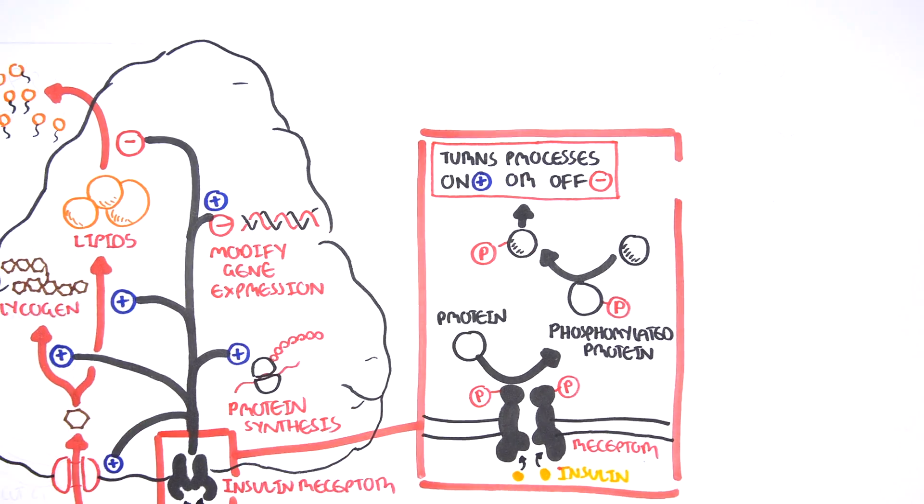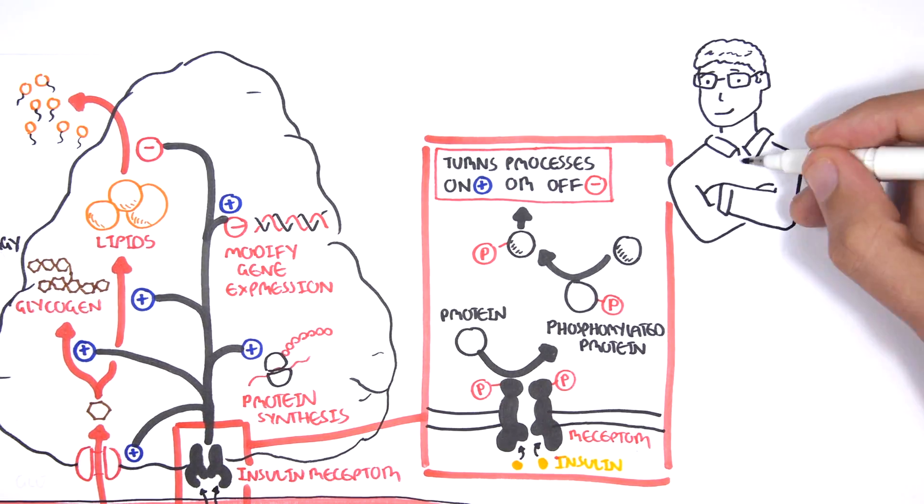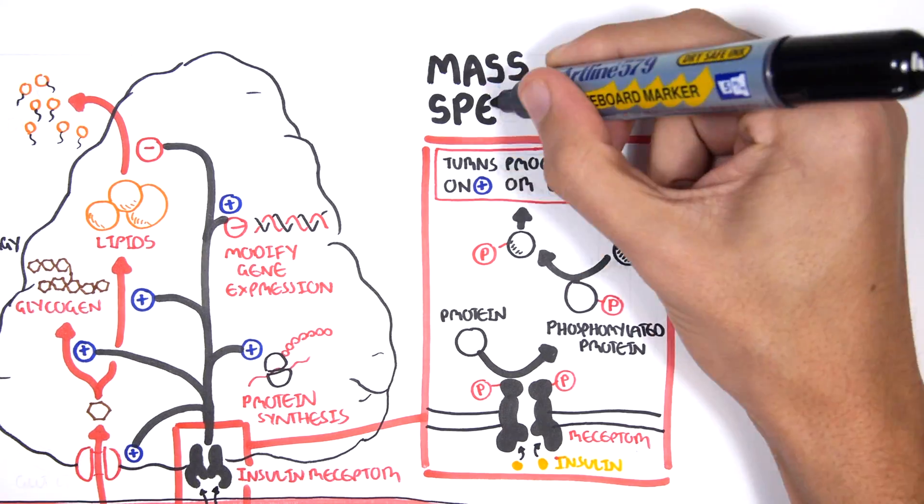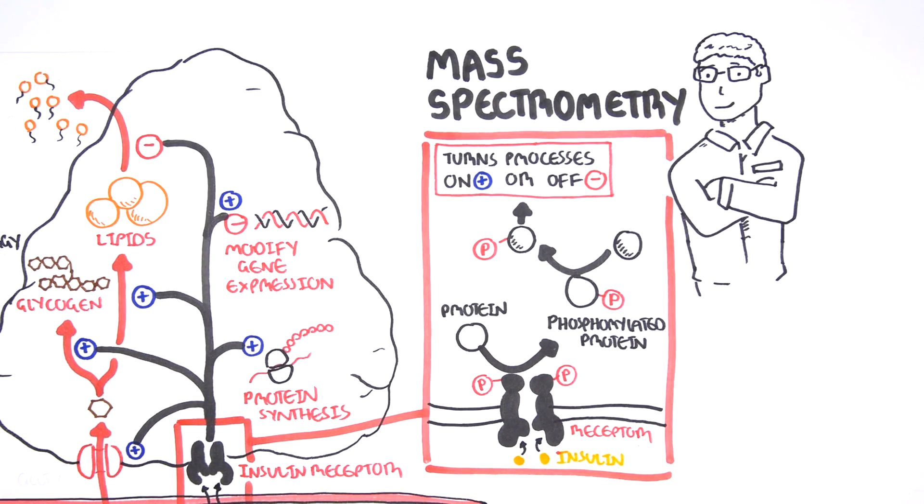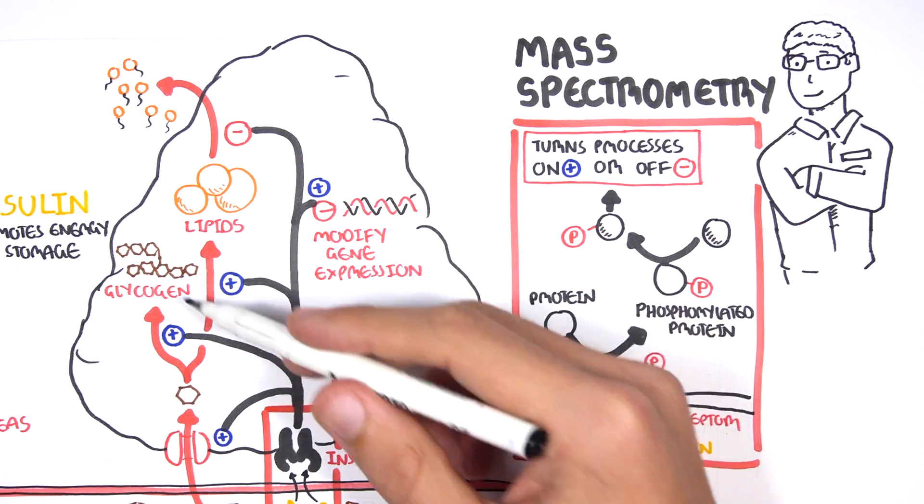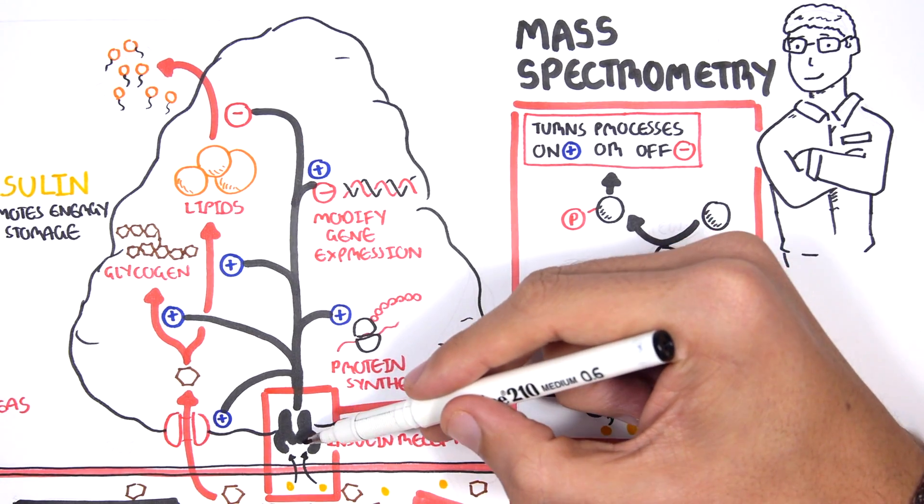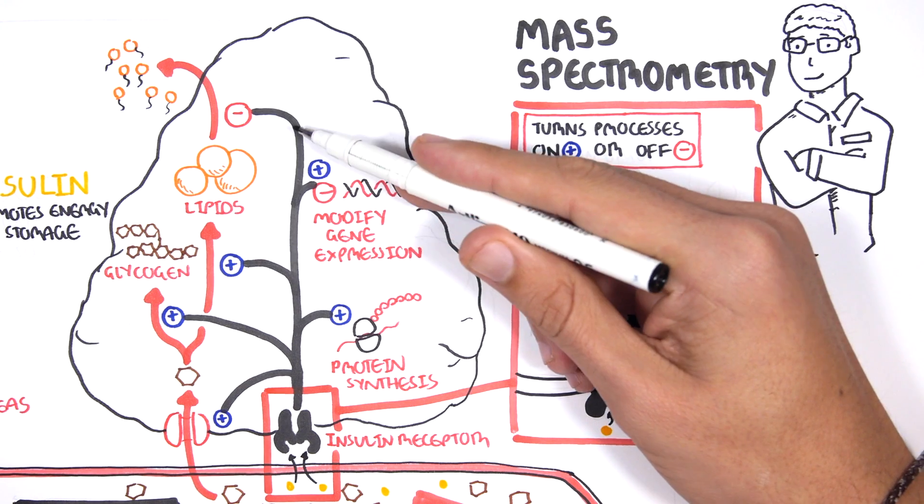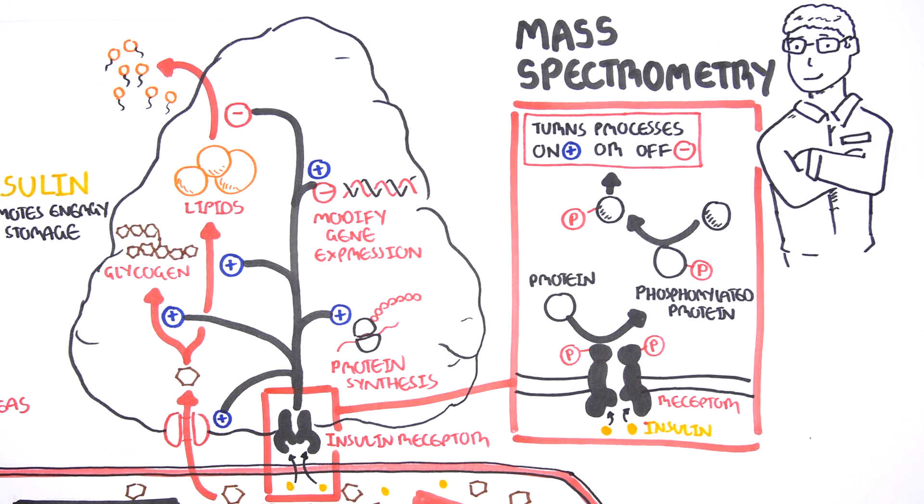Researchers can study protein phosphorylation in cells using a technique called mass spectrometry. Recent studies in the fat cell reveal that following insulin stimulation, many thousands of changes in protein phosphorylation occur. But importantly, they do not occur simultaneously. Some happen rapidly, others more slow. Some go up and others go down.